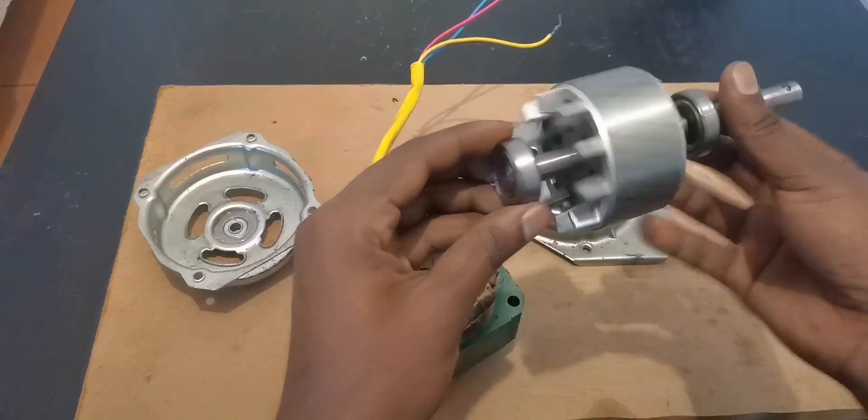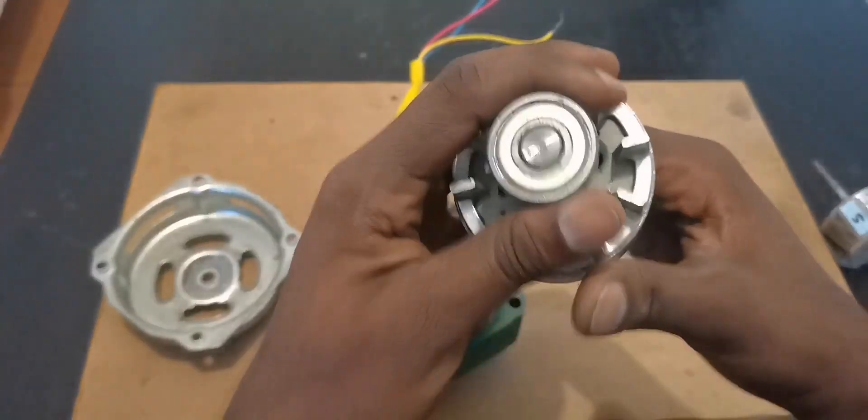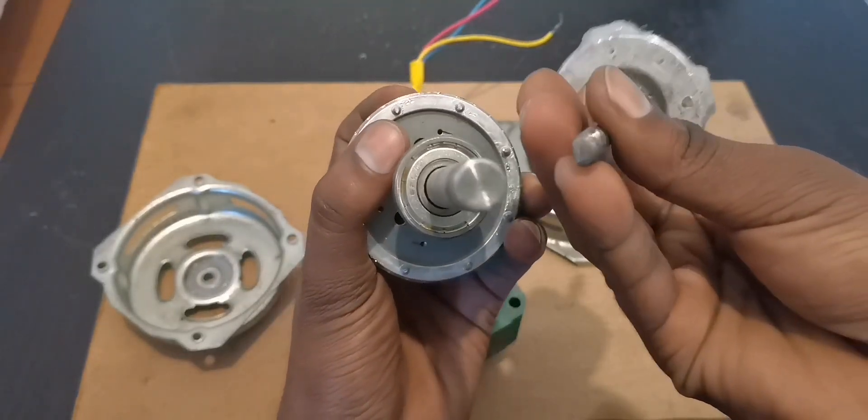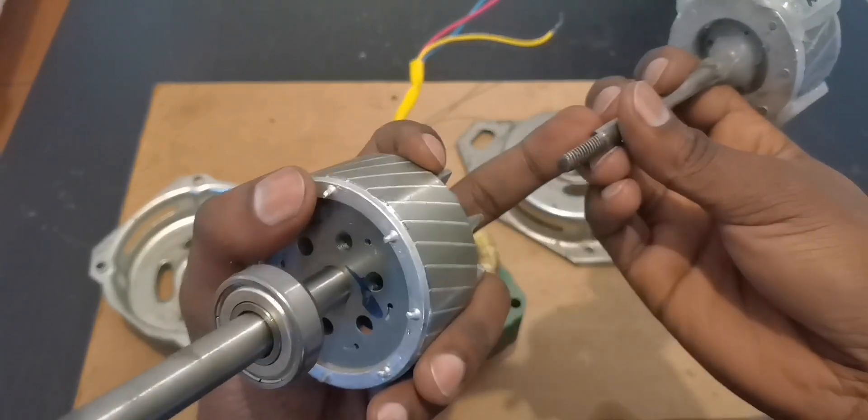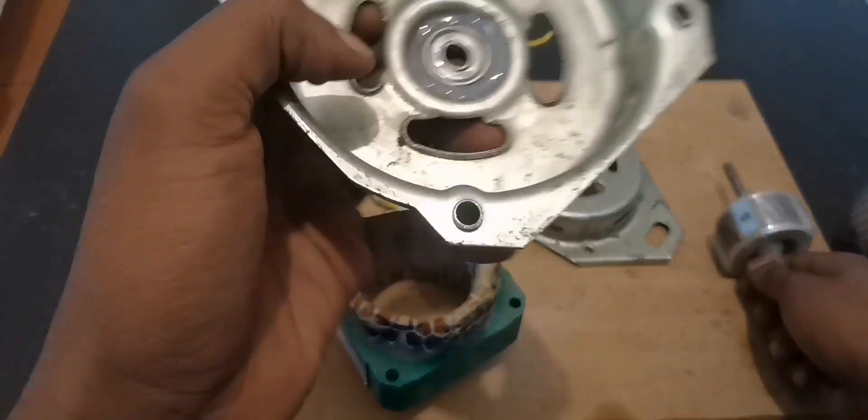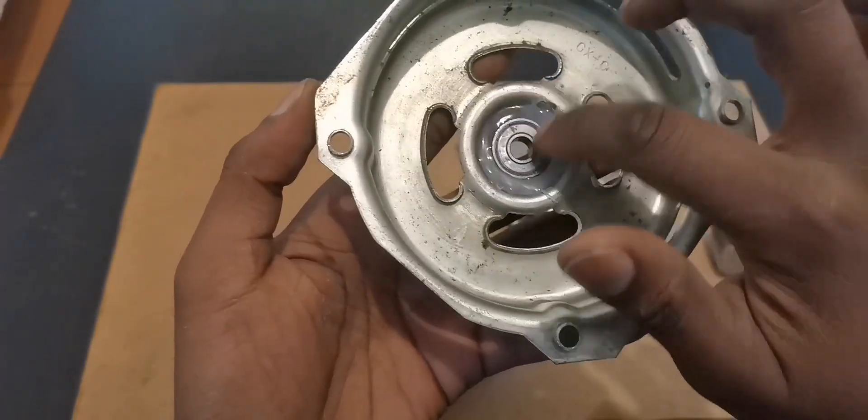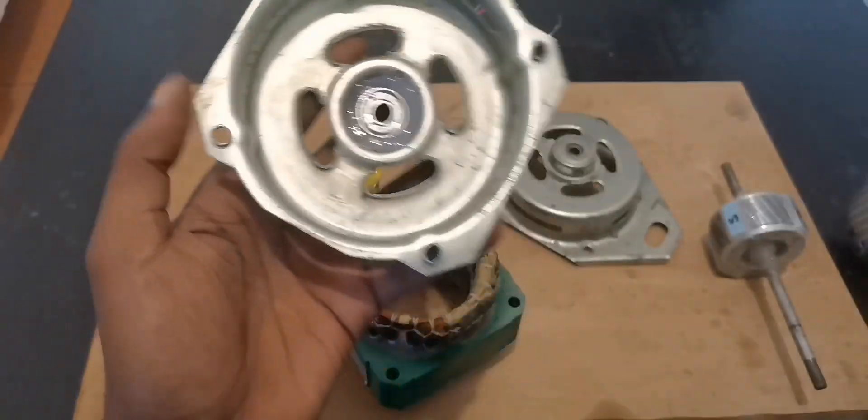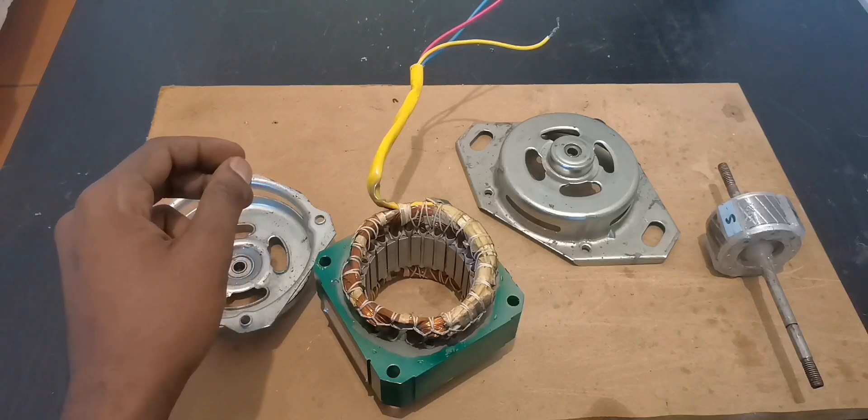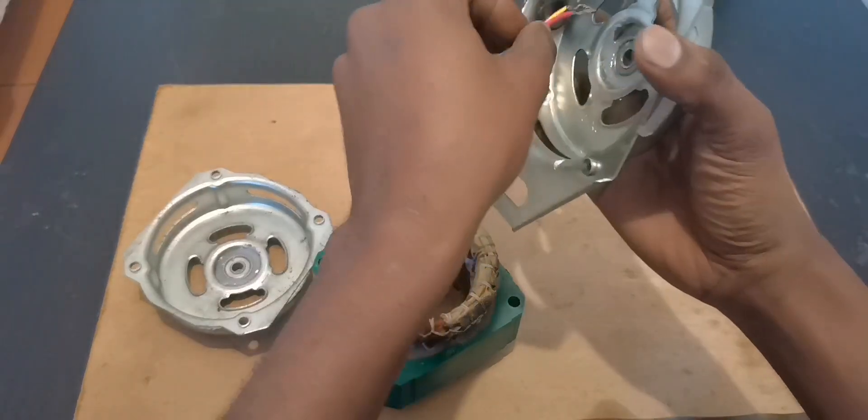We're not gonna need this in this project. And one more thing, you can see these bearings, they are big. The rotor we're using is smaller, that means we need small bearings. So this is what I did: because we're using small bearings, I put glue in the other space just to hold the bearing at the middle. Let's put this aside, we're not gonna need it now.